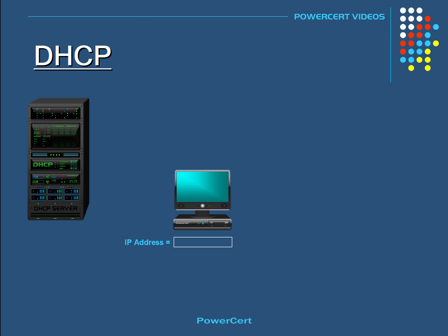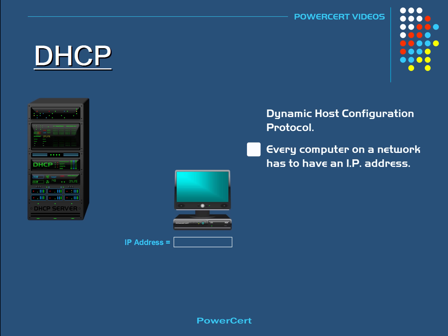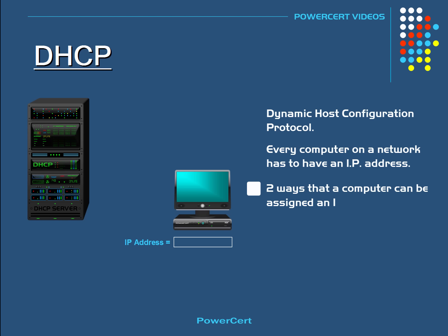Hello everyone. In this video we're going to talk about DHCP or Dynamic Host Configuration Protocol. Every computer or device on a network has to have an IP address for communication purposes. An IP address is an identifier for a computer or device on a network. There are two ways that a computer can be assigned an IP address: a static IP or a dynamic IP.